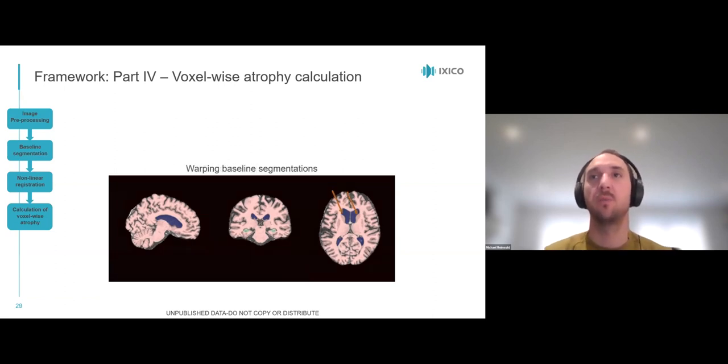Here, you can see the segmentations being warped into follow-up space, and then the video jumps back to baseline and does the warping again. I'm reusing the arrows from previous slides to highlight the area of ventricles and caudate to show large atrophy.